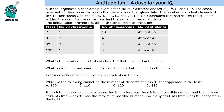Hello everyone, welcome to Aptitude Jab. This is a set based on a couple of tables. It says that a school organized a scholarship examination for four different classes: 7, 8, 9, and 10. The school reserved 10 classrooms for conducting the examination on that given date.